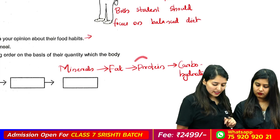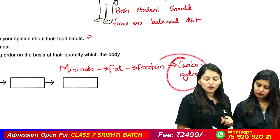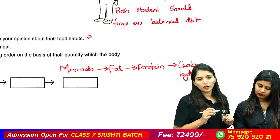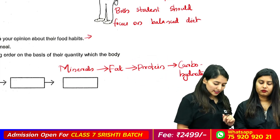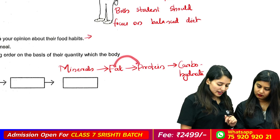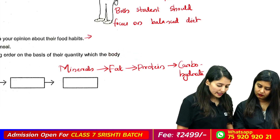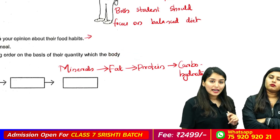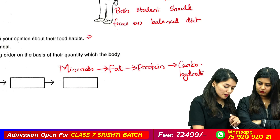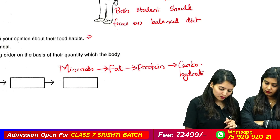Arrange the nutrients in the ascending order on the basis of their quantity which the body needs: proteins and minerals, carbohydrates and fat. The body — I did a correct title in the order. It is not about it — the beginning order. I said protein, carbohydrate — a two-core level — mineral. I think protein — carbohydrate — fat.